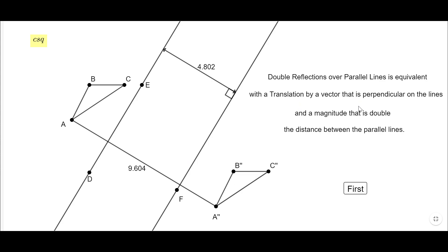translation by a vector that is perpendicular on these two lines, D-E and the line that goes through F, and the magnitude, a distance that is double the distance between the parallel lines.